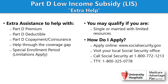The Part D Low-Income Subsidy, also known as Extra Help, is a program through Social Security that offers extra assistance to help with Part D premiums, deductibles, co-payments, and co-insurances, and can also help through the coverage gap or donut hole. You can qualify if you're single or married with limited resources, and you can apply through SocialSecurity.gov, visit your local Social Security office, or call Social Security at 1-800-772-1213.